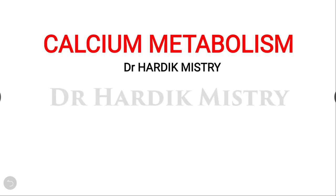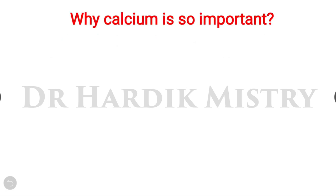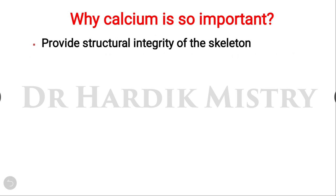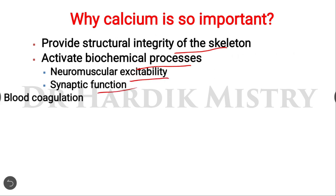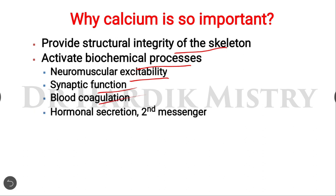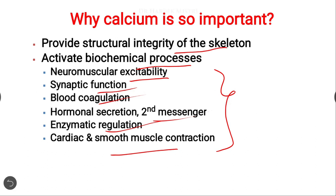Hello everyone. In this video we are going through calcium metabolism. Why is calcium so important for our body? Because it provides structural integrity of the skeleton and activates biochemical processes inside our body — for example, neuromuscular excitability, synaptic function, blood coagulation, hormonal secretion and second messenger signaling, enzymatic regulation, and cardiac and smooth muscle contraction. Without calcium ion, all these processes are not possible.